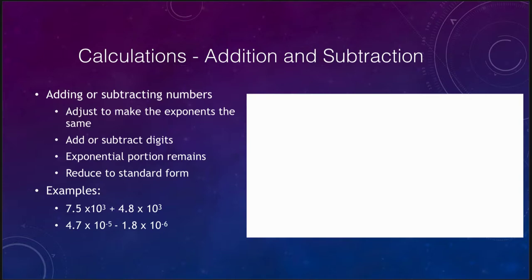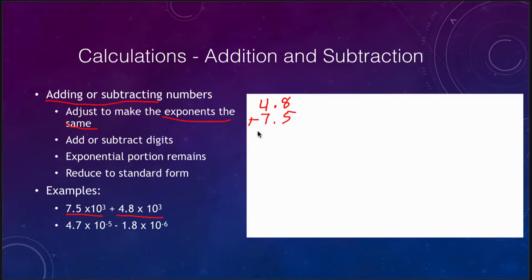For addition or subtraction, the first step is to make the exponents the same — if the exponents are not the same you cannot add or subtract. For our first example, 7.5 times 10 to the third plus 4.8 times 10 to the third, the exponential portion is already the same so we can just add the digits: 4.8 plus 7.5 gives 12.3.